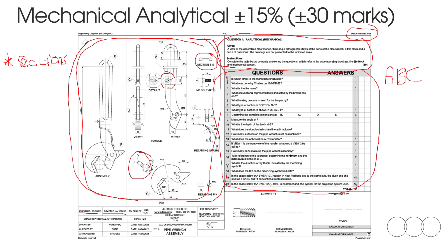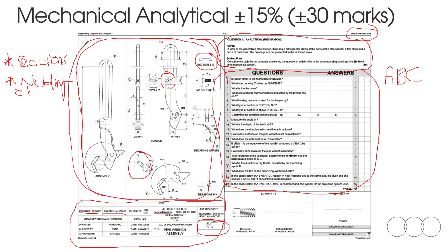You're also going to get information regarding the drawing — who drew it, who checked it, who approved it, and the file name. You will also get either a machining symbol or a welding symbol. That is my second tip: you need to know your welding and machining symbols because I promise you they are going to ask you about one of them. You can find these in your workbook, usually at the beginning of a chapter, where every part of the symbol is explained.